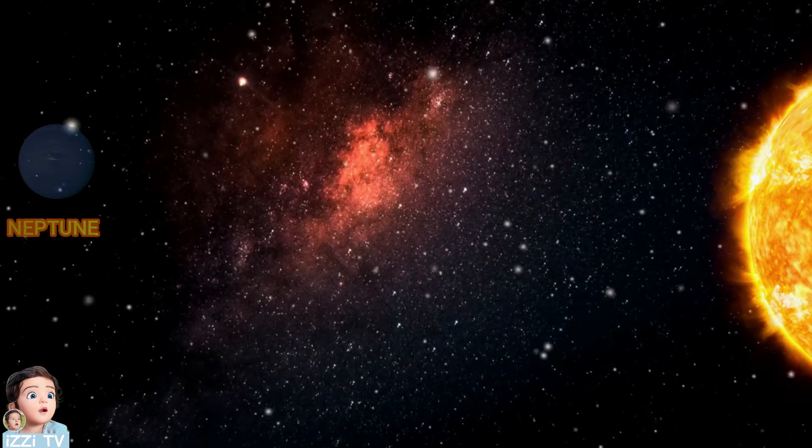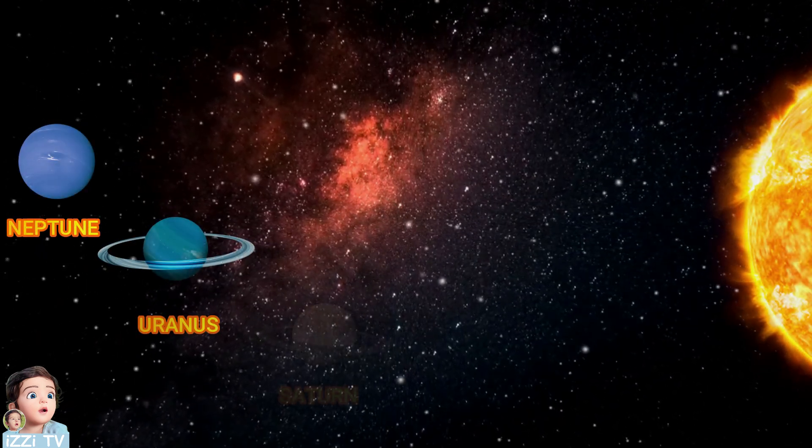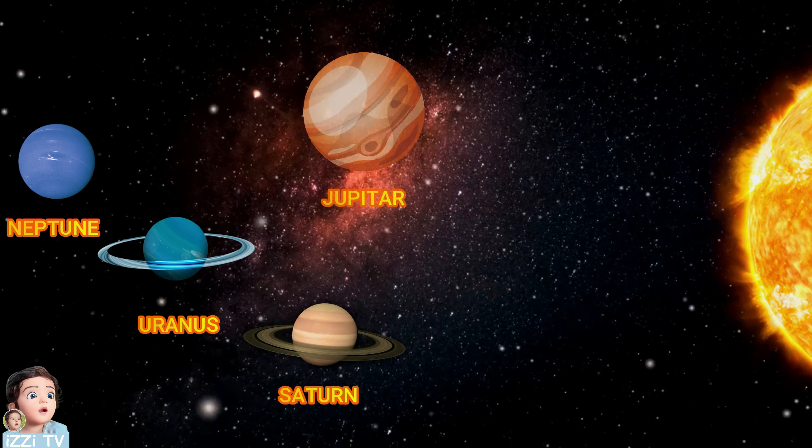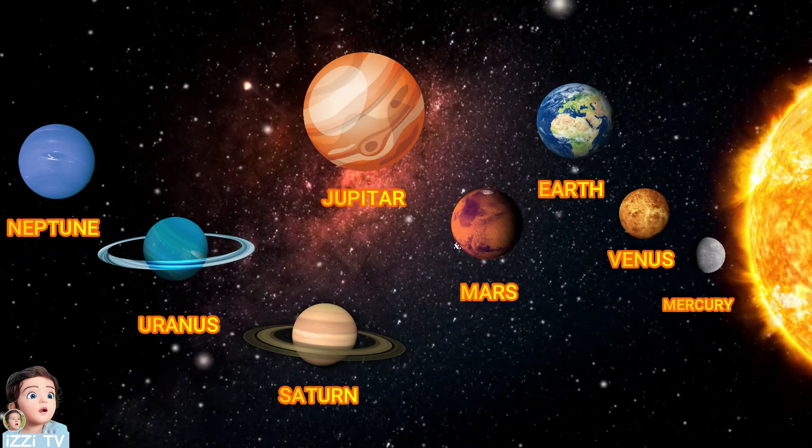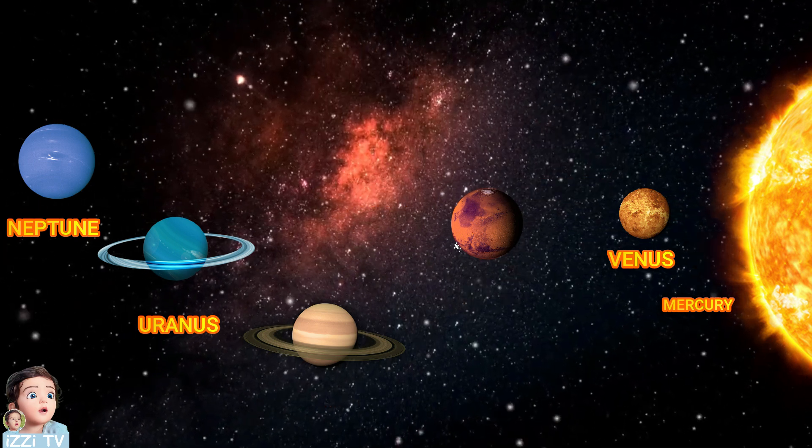Neptune, Uranus, Saturn, Jupiter, Mars, Earth, Venus, and Mercury. Ulises. Bye! Bye!